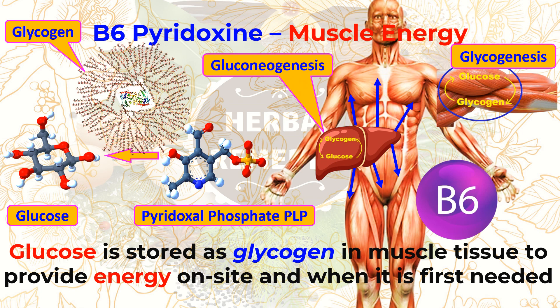In another process known as gluconeogenesis, which means synthesis of new glucose from non-carbohydrate carbon, PLP is needed to convert amino acids to glucose.